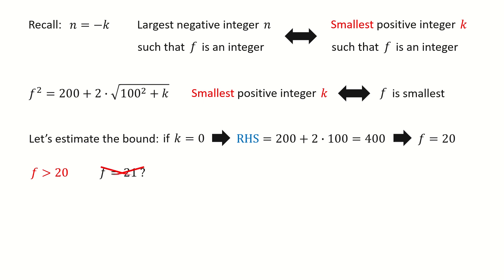What about 21? No, it cannot be 21. If you look at the right-hand side of this equation, it's an even integer, so that means f must be an even integer.